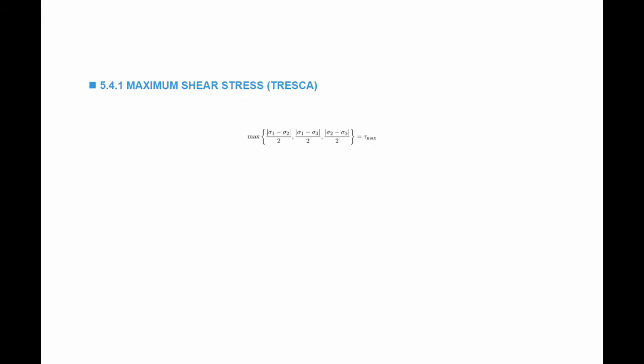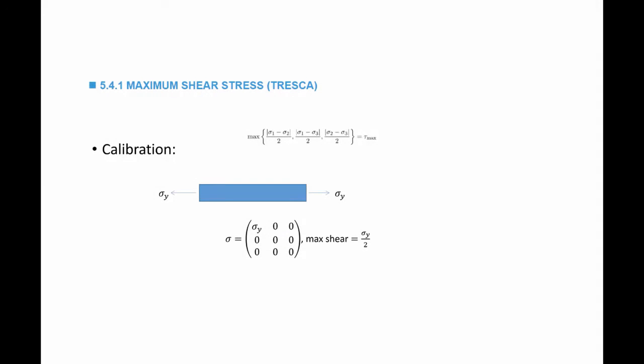The first criterion states that the material will fail when the maximum shear stress reaches a critical value. We call this critical value tau max, and the maximum shear stress is the maximum of one of those three values. To find tau max, I calibrate this material model by taking a specimen to the lab and pulling it until I reach sigma yield and it fails. The stress state in this case is equal to sigma yield and the rest are zeros. The maximum shear in this state is equal to the maximum difference between the principal stresses divided by 2, so sigma_y over 2. From here I calculate tau max as equal to sigma yield over 2.